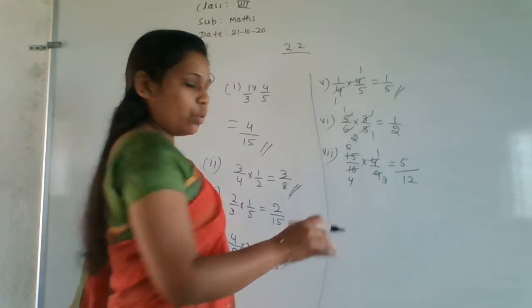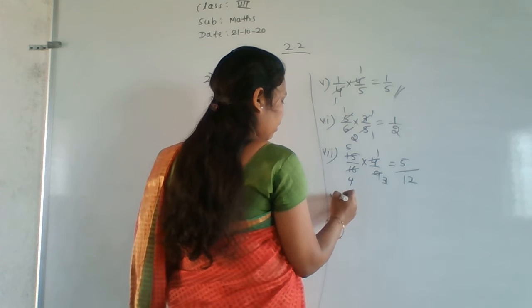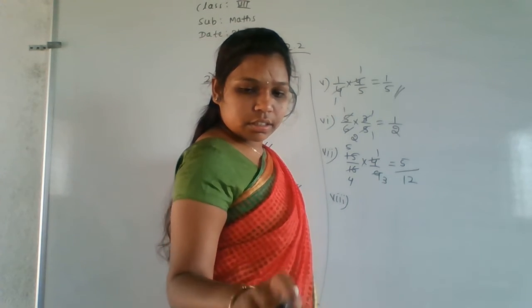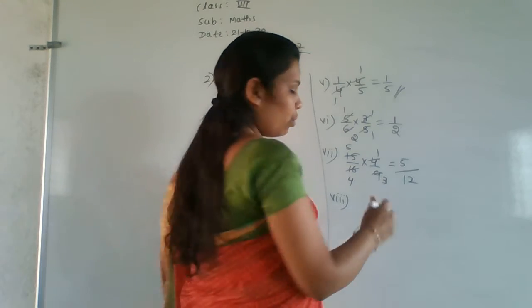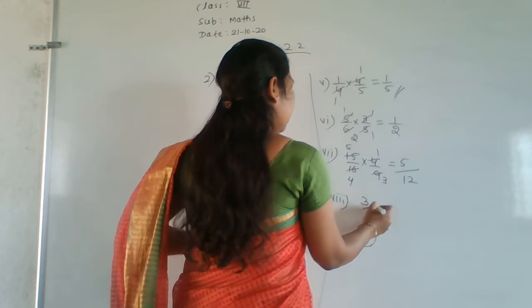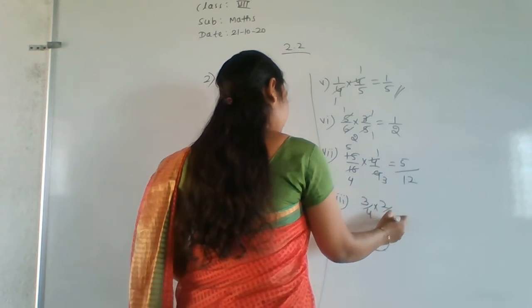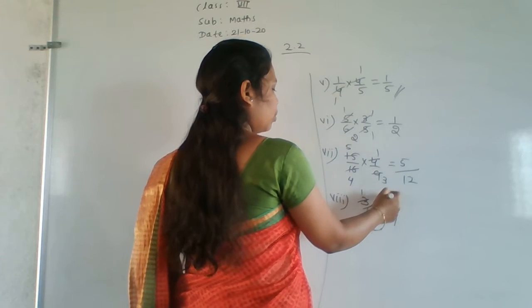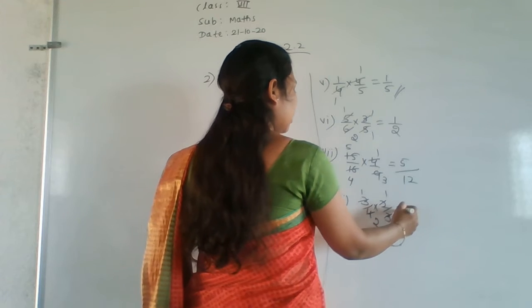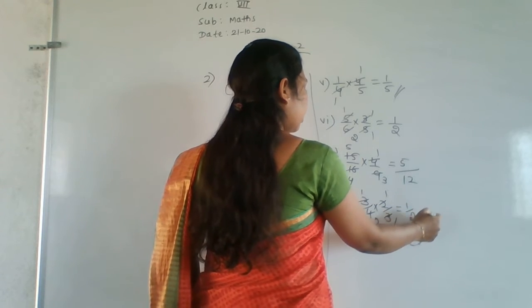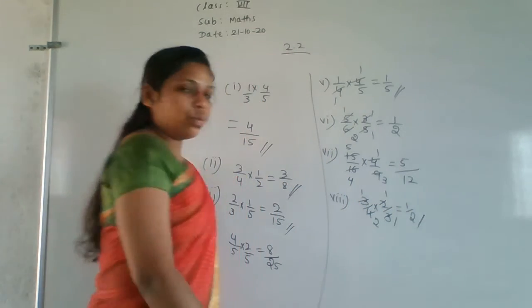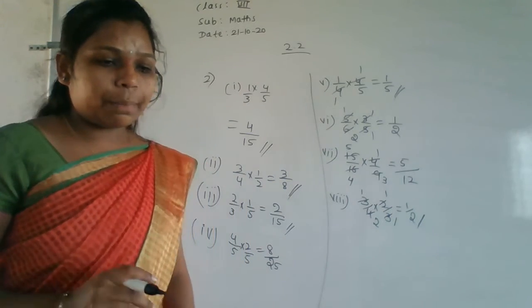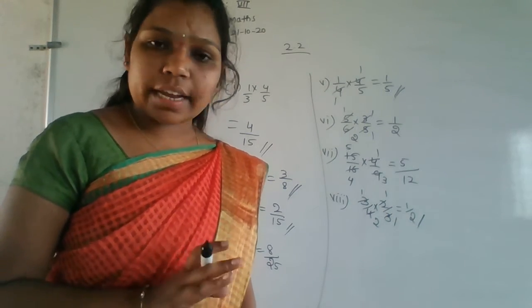Eighth question: 3/4 × 2/3. Cancel the 3s — 3 ones are 3. Cancel remaining 2 and 4 — 2 ones are 2, 2 twos are 4. Answer is 1/2. That completes the second meal of exercise 2.2.